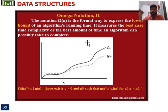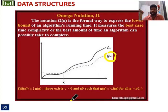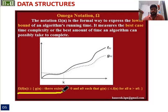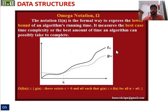Moving to Omega notation. The notation Omega(n) is the formal way to express the lower bound of an algorithm's running time. It measures the best case time complexity, or the best amount of time an algorithm can possibly take to complete.